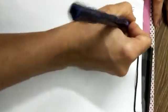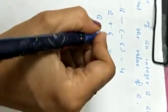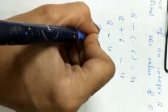Question number 14: the difference of an integer a and -6 is 4. Find the value of a. According to the question: a - (-6) = 4, which gives a + 6 = 4. By transposition, a = 4 - 6 = -2. That is your answer.